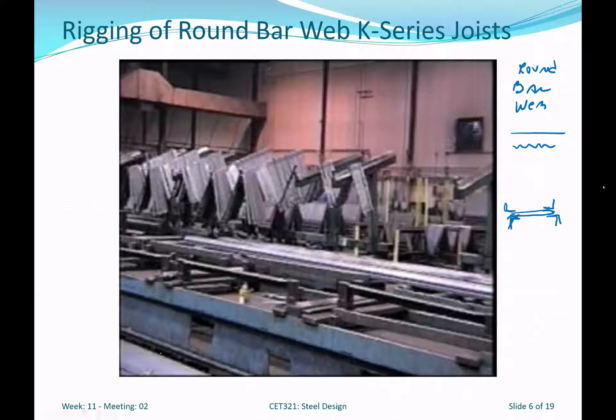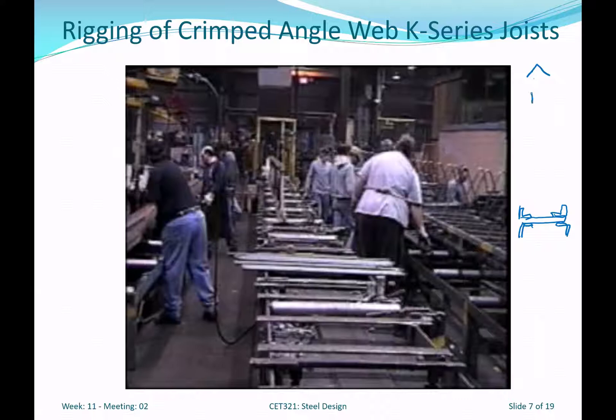To clarify the crimped angle shape: it takes an equal-leg angle and bends it down so that the resulting gap is about one inch wide, and there's a small flare at the base.